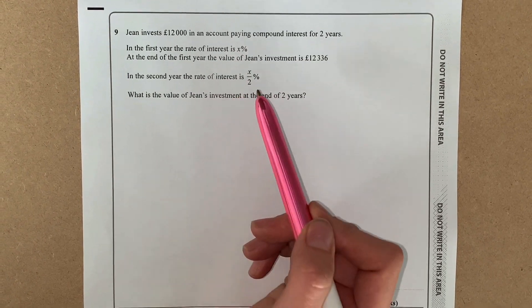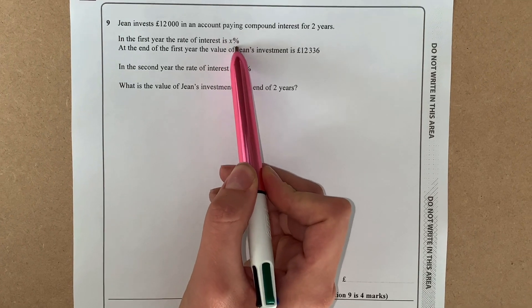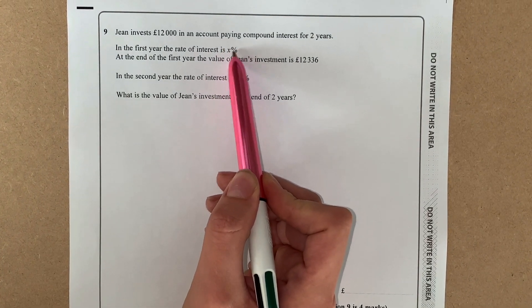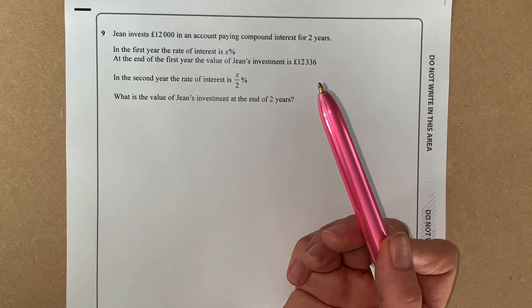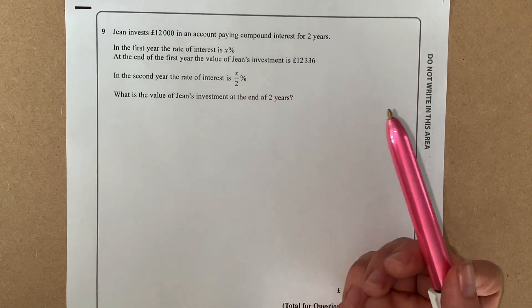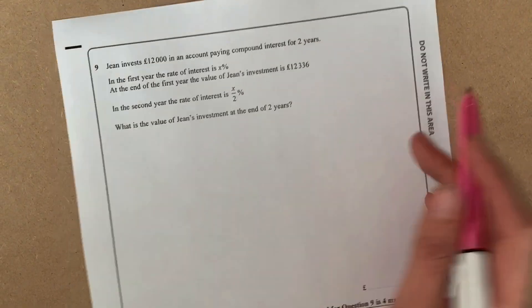So what we want to do is set up an equation to help us solve what x is worth. To do that, I'm going to start with the amount £12,000 and times that by x percent.